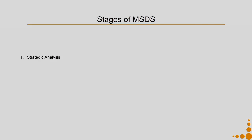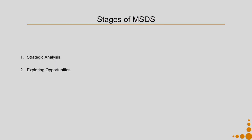Let us come to the stages of the MSDS methodology. The stages involve strategic analysis, where we try to understand the existing scenario and come up with the design intervention context. Then we get into exploring new opportunities — ideas and clusters of ideas — which are system-oriented or service-oriented ideas that help achieve the sustainability target envisioned in the strategic analysis step.